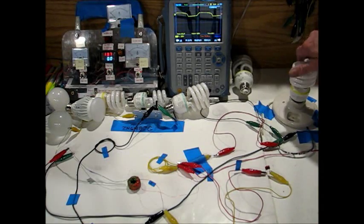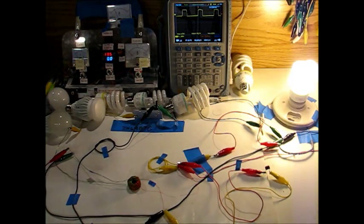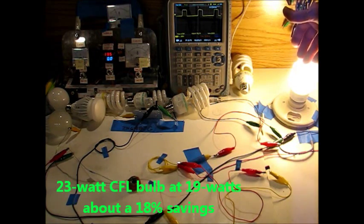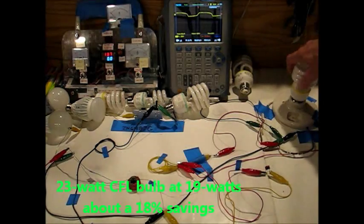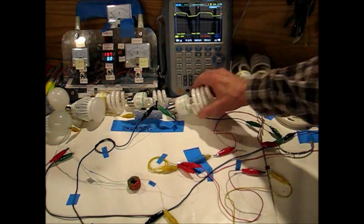This one here draws about 1.4 amps and it pulls about 18 and three quarter watts from the battery to power a 23 watt light bulb. It takes about a minute for it to get the full brilliance. The transistor remains cool to the touch on all of these bulbs that we're going through.